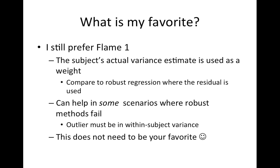My favorite approach is still FLAME1, because in many scenarios where the outlier is driven by within-subject variance, it can catch that automatically. I like that the weight used is the within-subject variance estimated from the first-level model, which has quite a few degrees of freedom and is a pretty good estimate — it likely reflects something genuinely unusual about that subject. That's different from robust regression, which uses the residual for that subject: just one number from one observation. FLAME1 has a lot of benefits and is already built into the software.